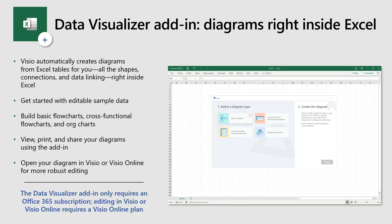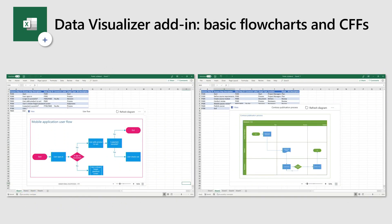This add-in helps you get started with sample datasets, which you can modify and add your own process steps to. You can create basic flowcharts, cross-functional flowcharts, and organizational charts within Excel. Using Visio Online, you can view, print, or share your diagrams — and Visio Online Viewer is available to all Office 365 users. You can use Visio Online or Visio Desktop if you want to further customize the diagram. This add-in only requires an Office subscription — no Visio license is needed to create diagrams from data.